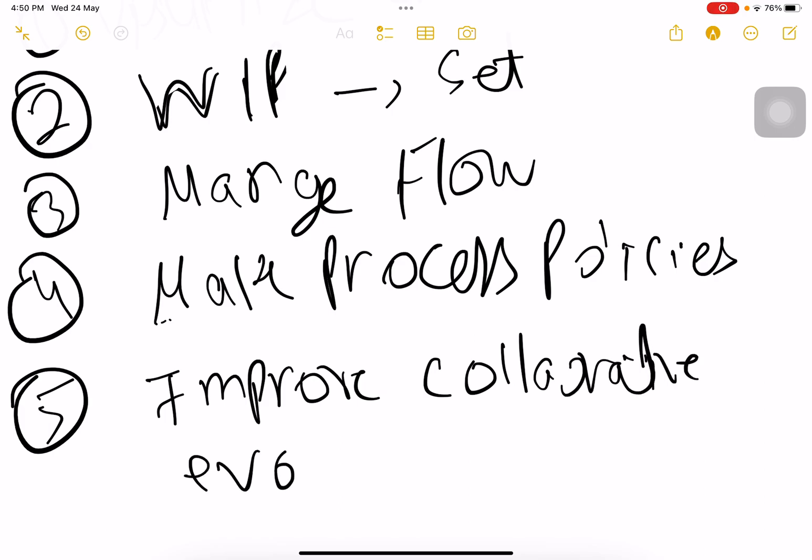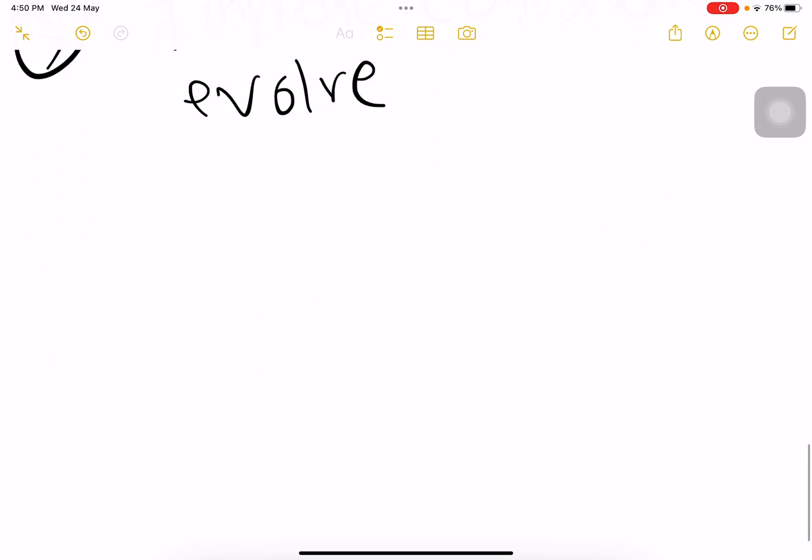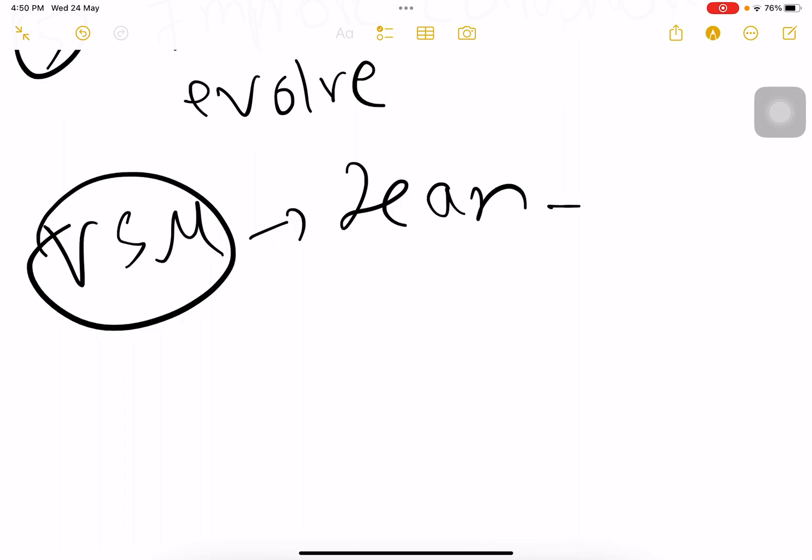One more way where the Kanban system is used is in value stream mapping, which is in Lean to remove the waste.